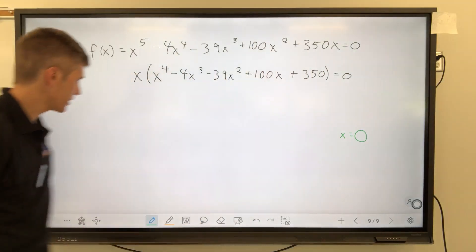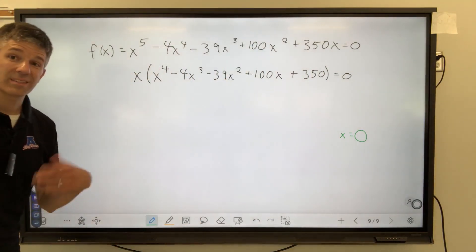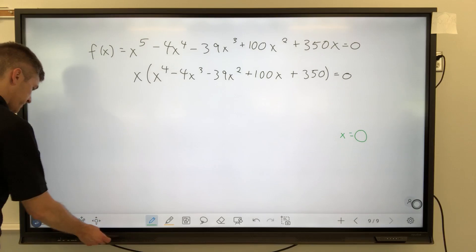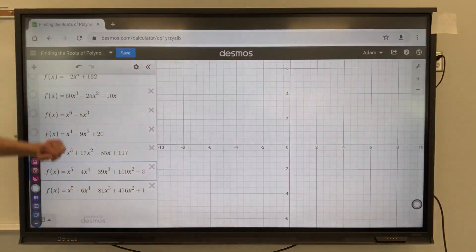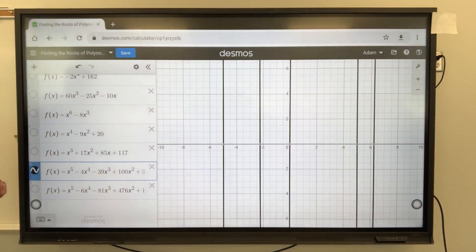Partial credit. There it is. Let's find the other ones that I can find for sure with a graph. Going to the graph now. There it is.